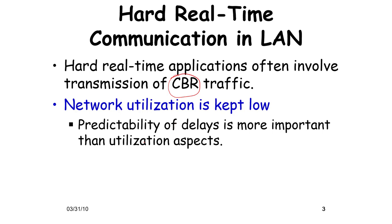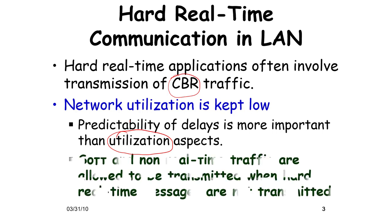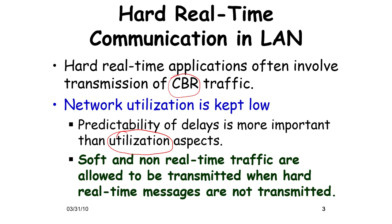For hard real-time applications, particularly with CBR (constant bit rate) traffic where traffic is somewhat predictable, network utilization is deliberately kept low such that delays are predictable. This is far more important than increasing utilization. After handling CBR and hard real-time traffic, soft and non-real-time traffic will be transmitted whenever there are gaps — similar to how we handled non-real-time processes in CPU scheduling.